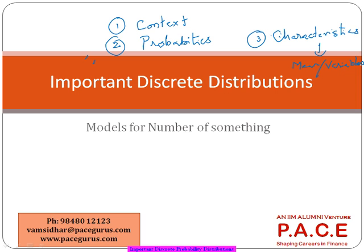How do I find out the probabilities using this model? And finally, I am also interested in finding out what are the characteristics of this particular model. Characteristics are nothing but the mean, the variance, something like that.